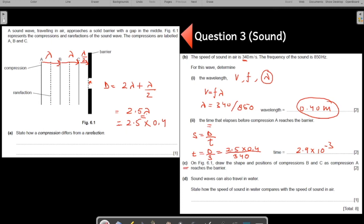C part. On this figure draw the shape and the position of the compressions B and C, position of the compressions B and C as the compression A reaches the barrier. So as the compression A is reaching the barrier, when you have A here, where are B and C?